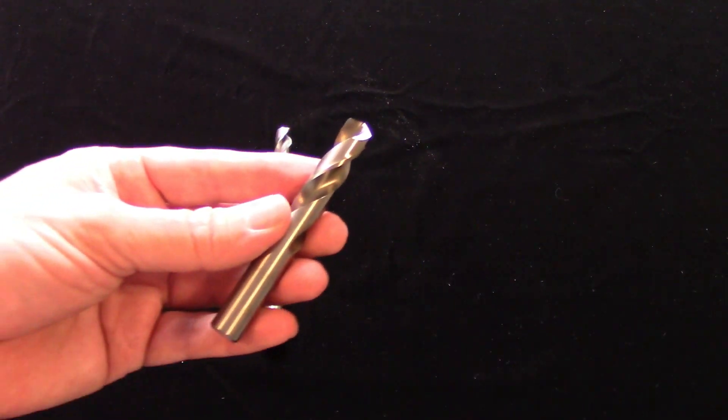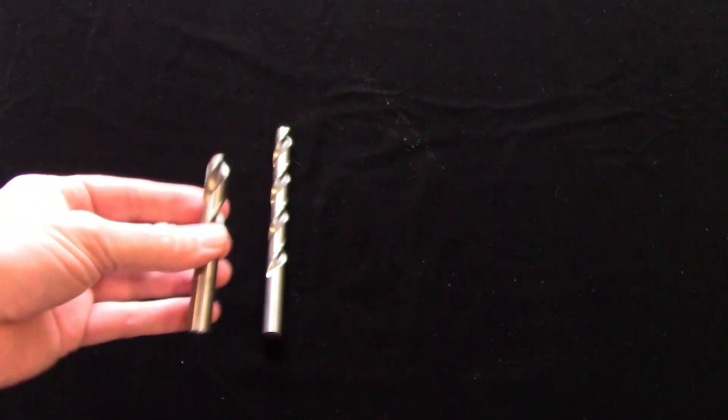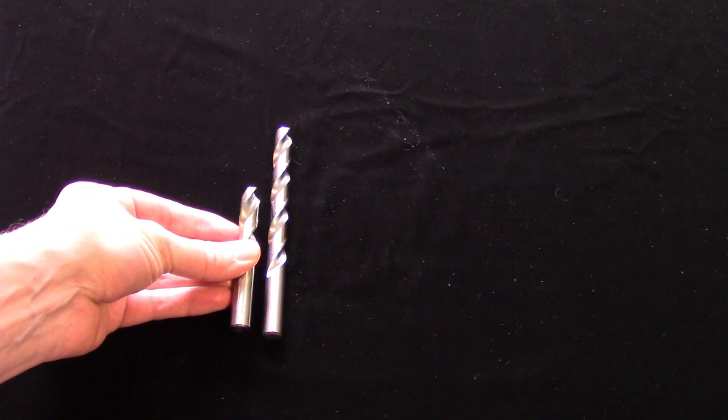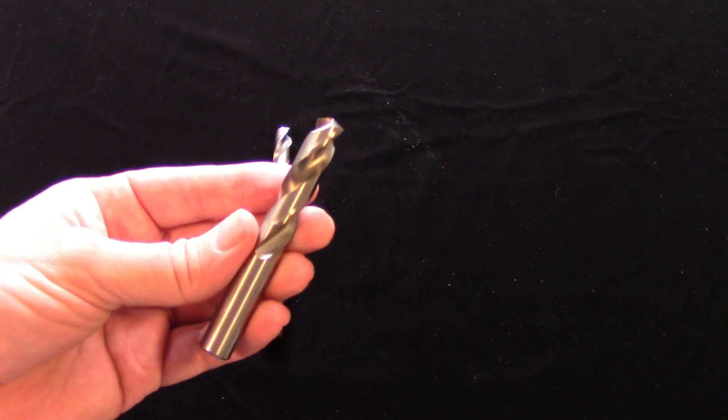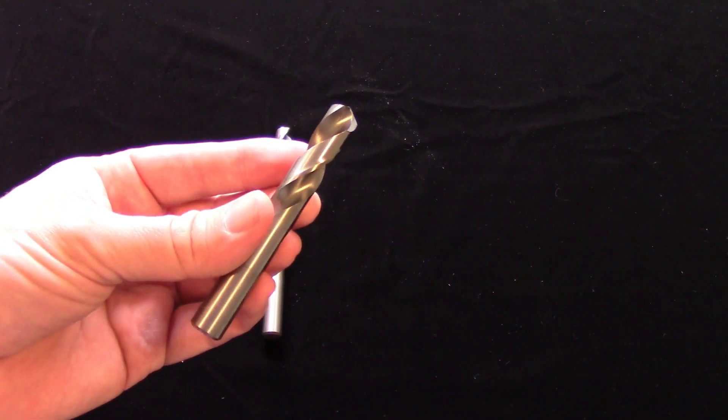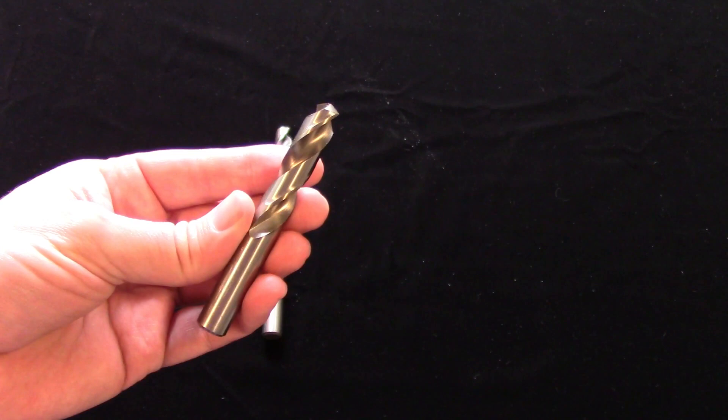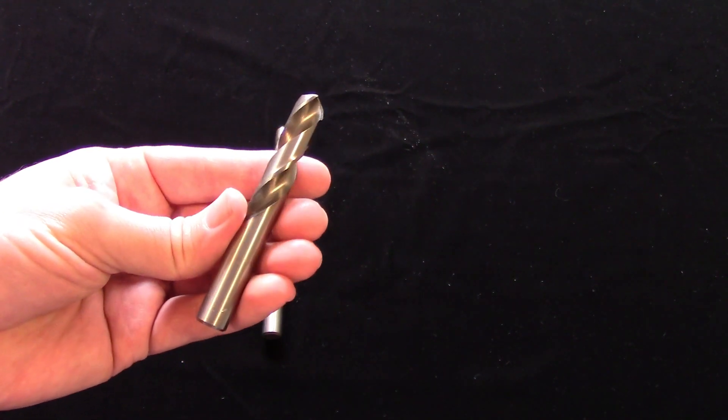Screw machine, or stub length drills, have flute lengths around half as long as a jobber drill of the same size, which makes them considerably more rigid. This can be useful, since you can often get away without spot drilling first, which means fewer tool changes and shorter run times.